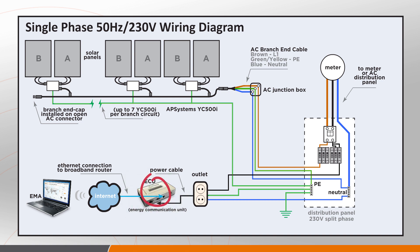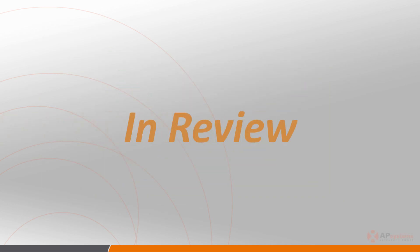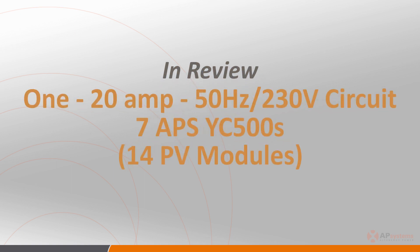A quick word on ECU placement. The ECU is plugged into a standard outlet, and you want to get it installed as close electrically as possible to the array to eliminate as many communication problems as possible. As a reminder, the maximum number of units per 230-volt, 20-amp circuit is seven, or a total of 14 PV modules.